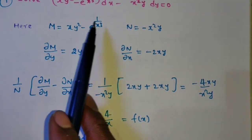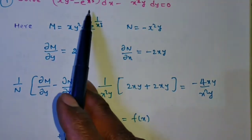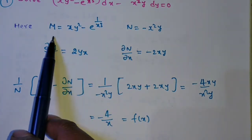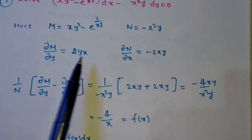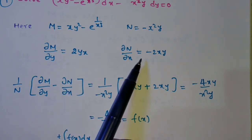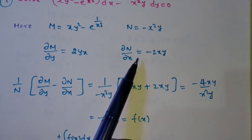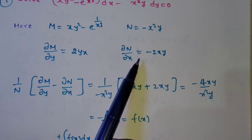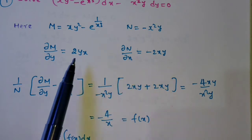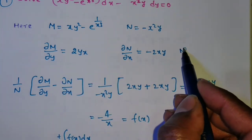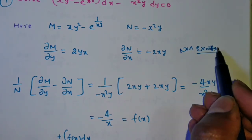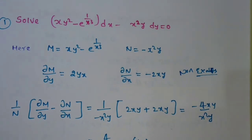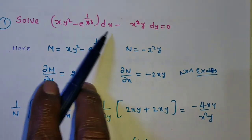This is in the form M dx + N dy = 0. Write down M and N, then find ∂M/∂y and ∂N/∂x. If ∂M/∂y equals ∂N/∂x it is exact and you can integrate directly. Here they are not equal, so it is non-exact. Check inspection method — can you rearrange or multiply to get an exact form? No, not possible.